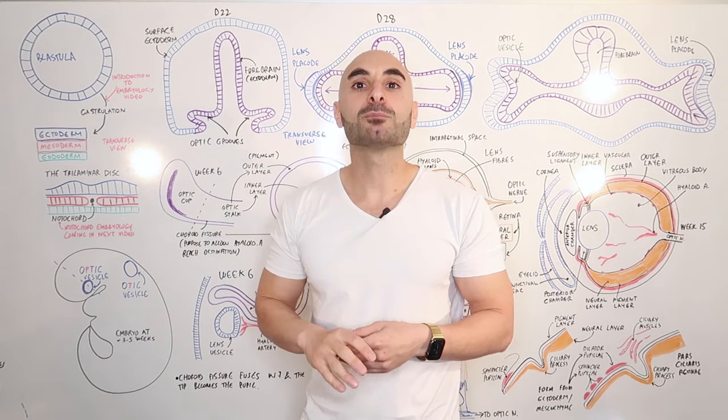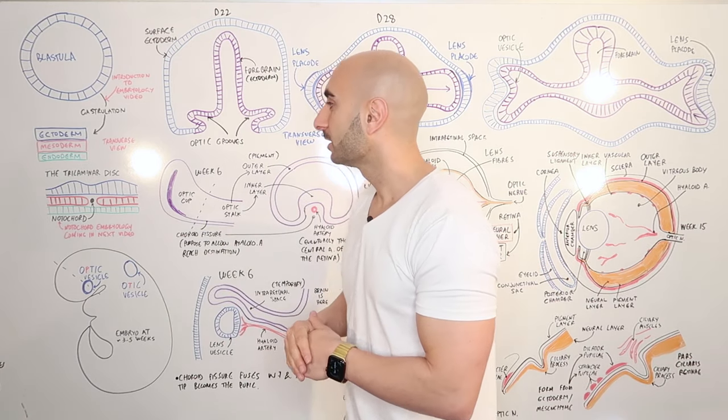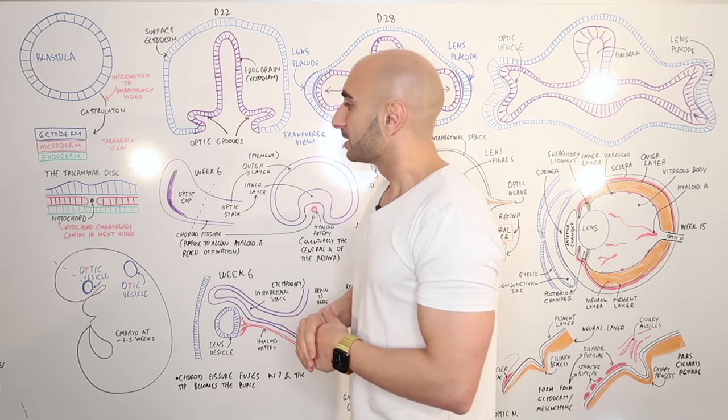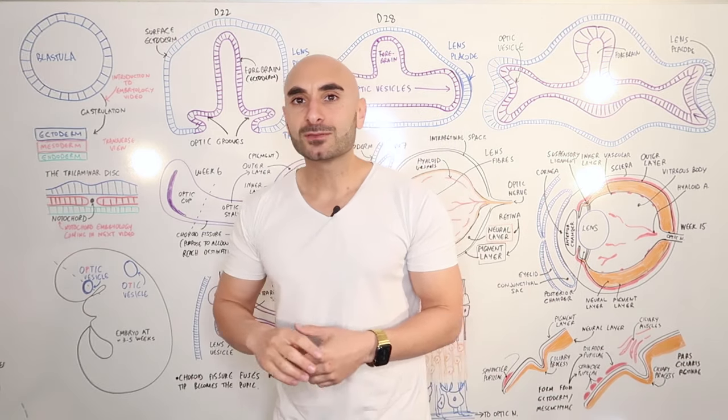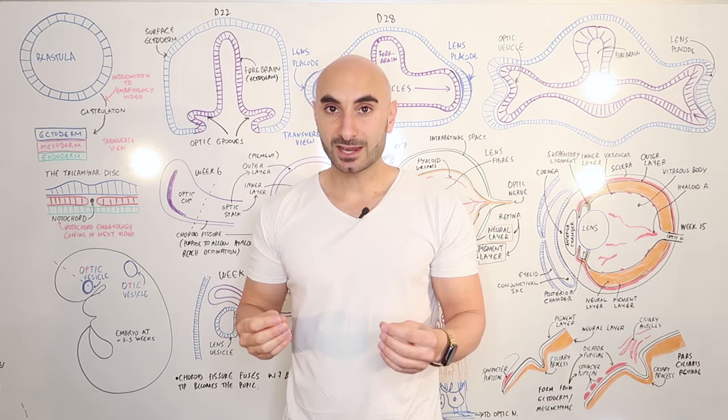The endoderm contributes epithelium to the GIT among other things, but for today's focus we're only going to be talking about ectoderm, because that's where our eyes derive from.